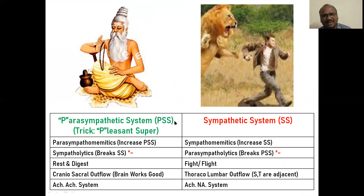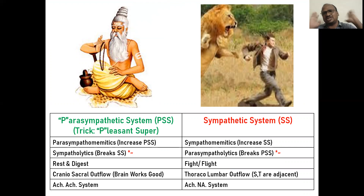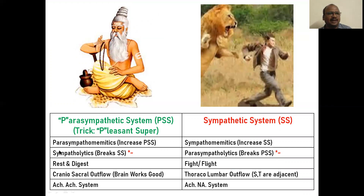Parasympathetic system — PSS. Sympathetic system — SS. Trick: P means pleasant. P stands for personality — super personality. P stands for pleasant. Like that you can remember. Parasympathetic.